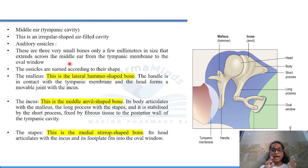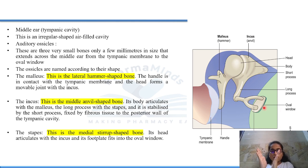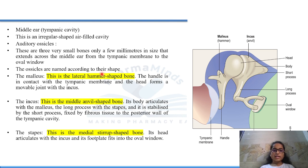These small bones extend from the tympanic membrane to the oval window. The ossicles are named according to their shape. We have three ossicles: malleus, incus, and stapes.